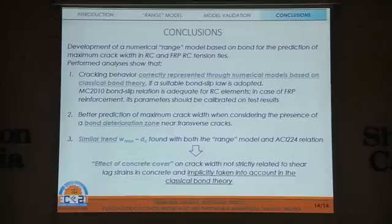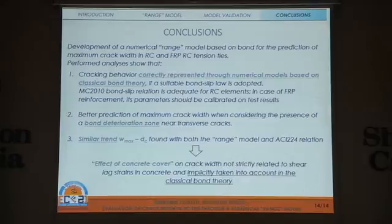In conclusion, numerical models based exclusively on bond-slip relations are able to correctly predict maximum crack width provided that a suitable bond-slip law is adopted. An enhanced estimate can be obtained by considering the presence of a bond deterioration zone near transverse cracks, also for FRP reinforcement. A similar linear trend between maximum crack width and concrete cover is obtained with the proposed range model, confirming that the concrete cover effect is implicitly taken into account in classical bond theory.